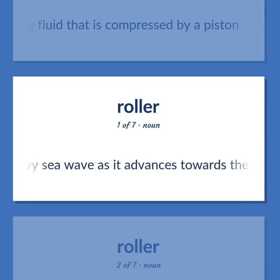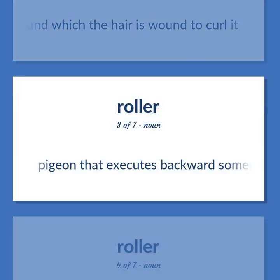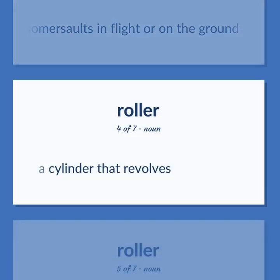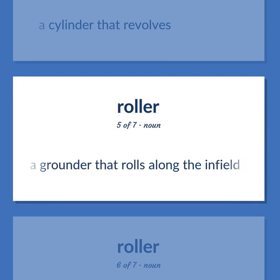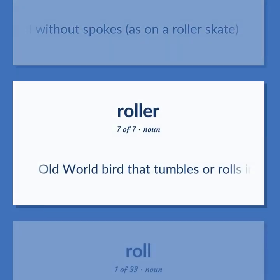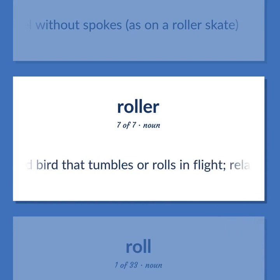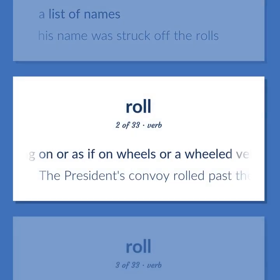Roll (noun): a long heavy sea wave as it advances towards the shore. A mechanical device consisting of a cylindrical tube around which the hair is wound to curl it. A pigeon that executes backward somersaults in flight or on the ground. A cylinder that revolves. A grounder that rolls along the infield. A small wheel without spokes, as on a rollerskate. An old world bird that tumbles or rolls in flight, related to kingfishers. A list of names — his name was struck off the rolls.